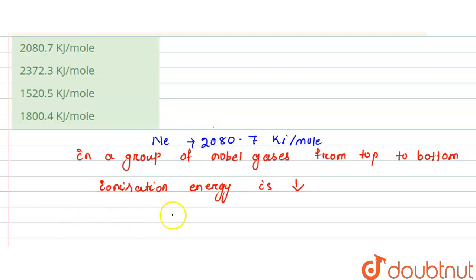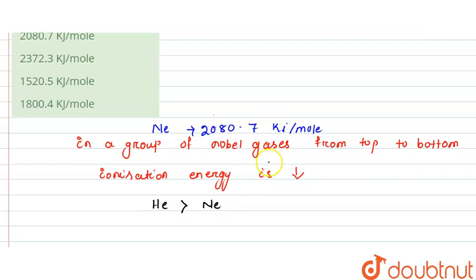So now helium is greater than neon. So here neon is 2080.7 kilojoule per mole. So helium value may be 2372.3 kilojoule per mole.